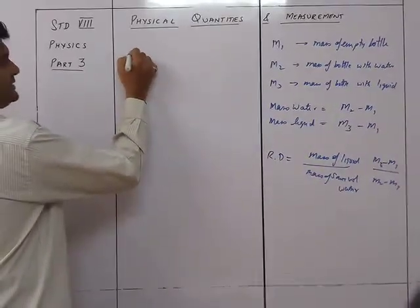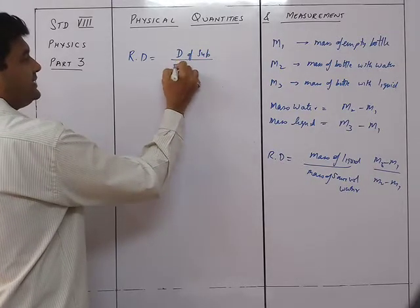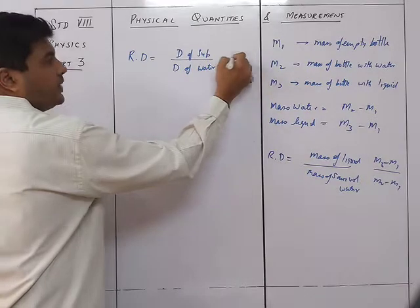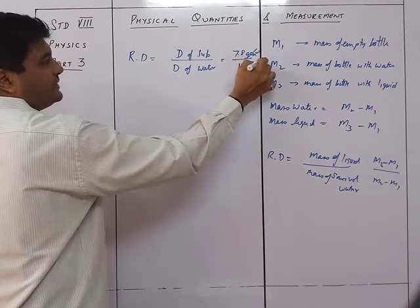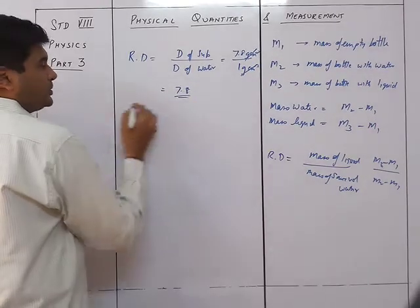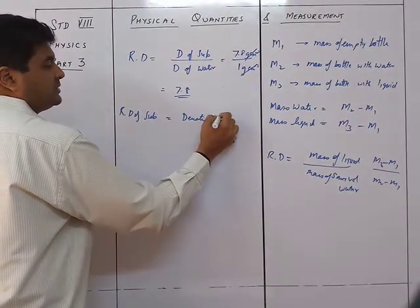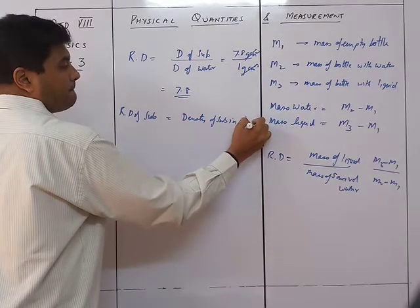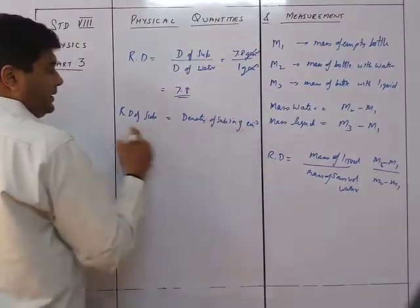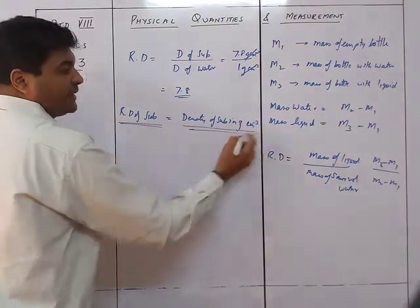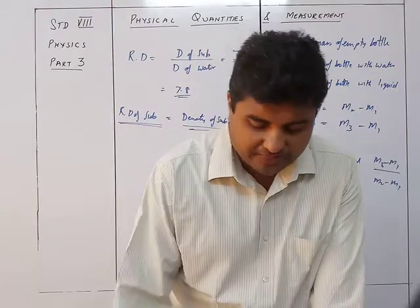The relative density equals density of substance upon density of water. The density of water is 1 gram per centimeter cube. If the density of a substance is 7.8 gram per centimeter cube, then the gram per centimeter cube cancels, giving 7.8. So the relative density of a substance equals the density of that substance expressed in gram per centimeter cube.